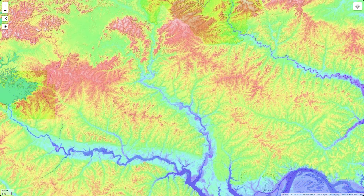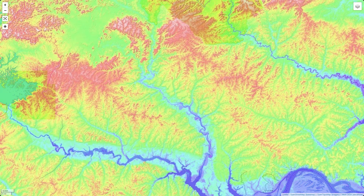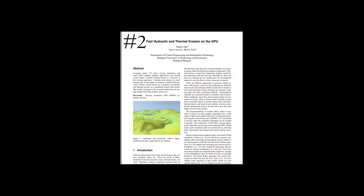As of yet, I've not implemented a proper tectonic simulation, but I've looked much more into erosion by water. To simulate the effect of running water on a topology map, there are many approaches, but to simplify, they can be divided into three categories: 1. Water as particles, 2. Water as fields, and 3. Water flow as directed graph networks.